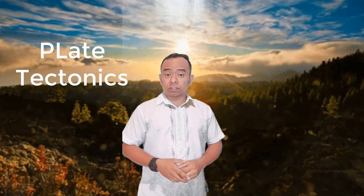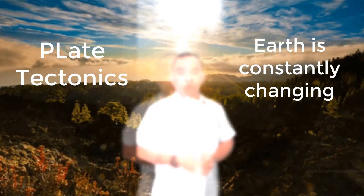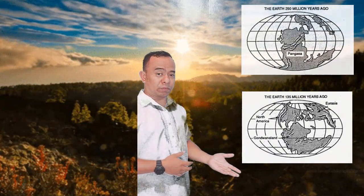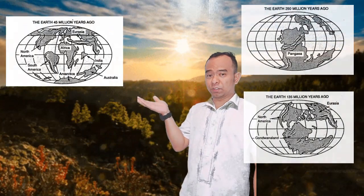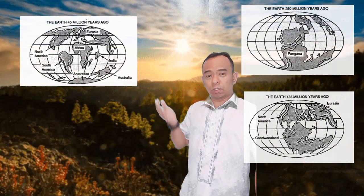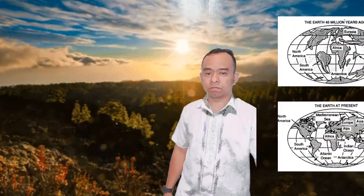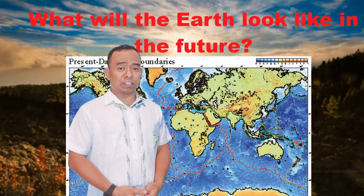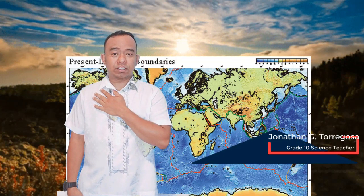Due to plate tectonics, the earth is constantly changing — from 250 million years ago, to 135 million years ago, to 45 million years ago, and the world at the present time. What do you think will the earth look like in the future? Again, I am Sir Jonathan G. Toregosa, your Grade 10 science teacher.